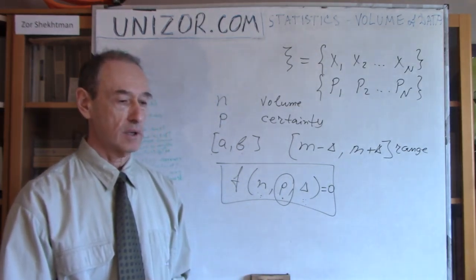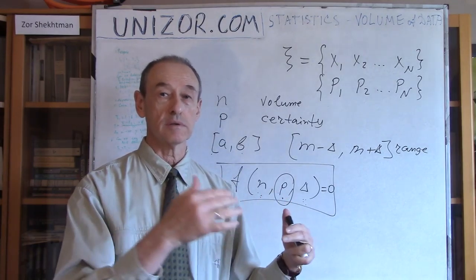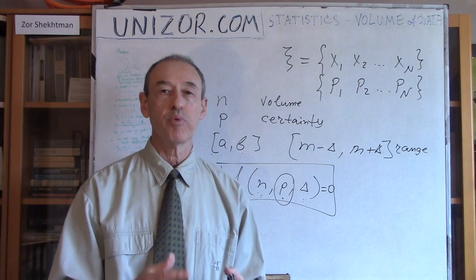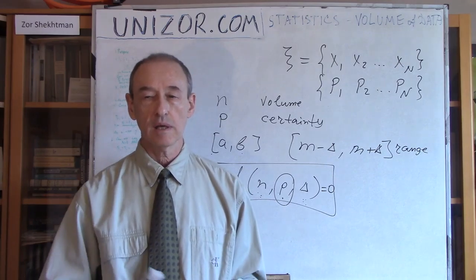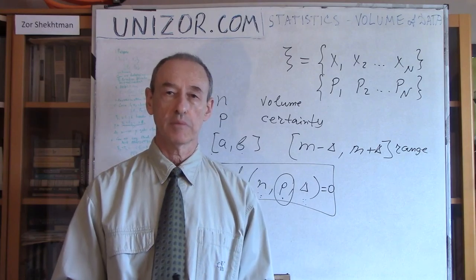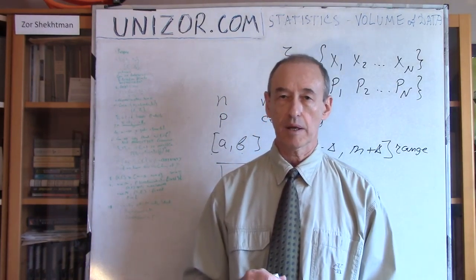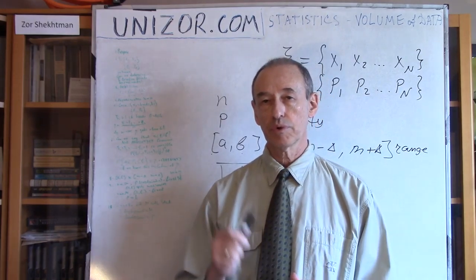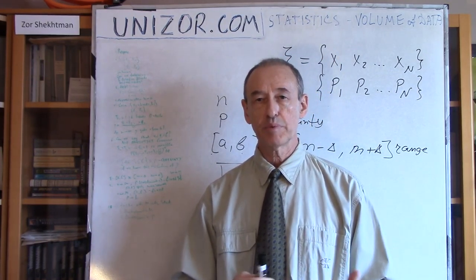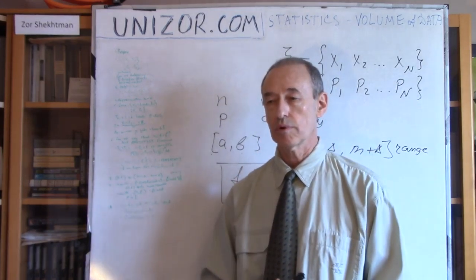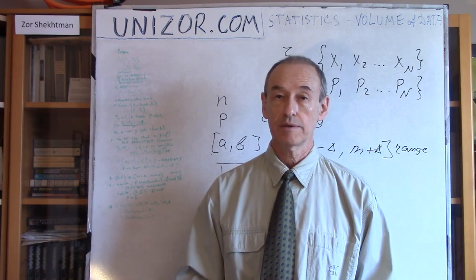The expression that our parameter is within a certain range with certain probability is a key point to understand mathematical statistics. It's not absolute — it's always related to a certain level of certainty with which we can make our conclusions. That probably concludes my introductory part to mathematical statistics. I would like you to also read the notes for this lecture, presented on unisor.com, where I explain things maybe slightly differently. All right, that's it for today. Thank you very much and good luck.